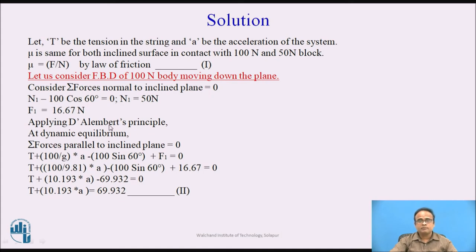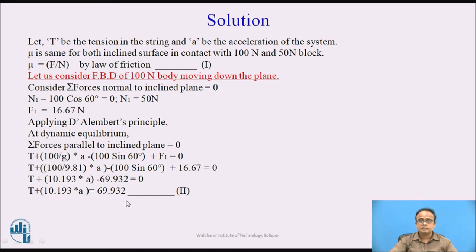Applying D'Alembert's principle at dynamic equilibrium — summation of forces parallel to the inclined plane equal to zero — we have T + (100/g) × A − 100 sin 60° + F1 = 0. Putting g = 9.81 and F1 = 16.67 N, we get the equation in terms of tension and acceleration: T + 10.193A = 69.932. This is expression number 2.